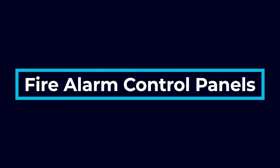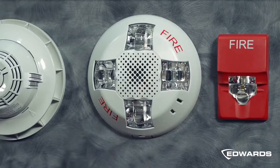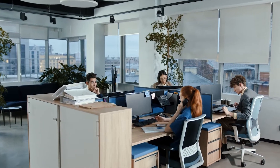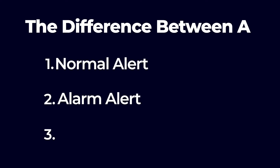Sometimes abbreviated FACP or FACU, a properly functioning fire alarm control panel is essential for the health of a fire alarm system as a whole, and of course it keeps everyone inside your building safe. But how do you use one of these all-controlling panels? And what's the difference between a normal alert, an alarm alert, and a trouble alert? If you're looking to learn exactly how to use a fire alarm control panel, you'll find the answers to those questions and more in this video. Keep watching.